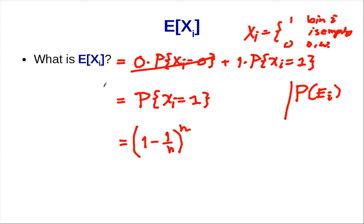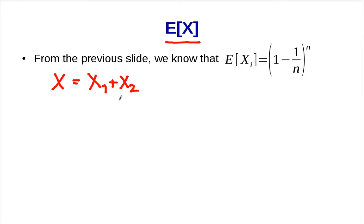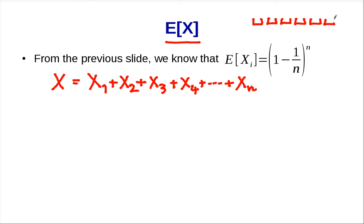Now we know the expected value of Xi. We want to compute the expected value of X. We know X is the number of empty bins. From our previous discussion, the number of empty bins is just the sum of the indicator random variables. If bin 1 is empty, X1 is 1; if bin 2 is empty, X2 is 1. If you sum all indicator random variables up to Xn, you get X, the number of empty bins. So the expected value of X equals the expected value of the sum from X1 up to Xn.